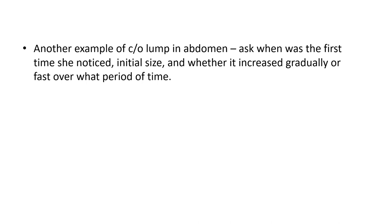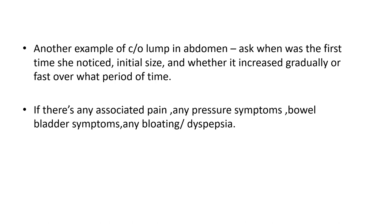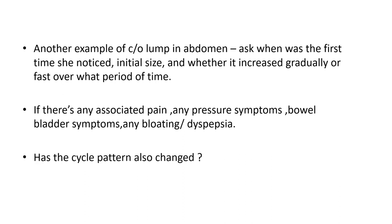Another example is a lump in the abdomen. Ask when was the first time she noticed that lump, what was the initial size, and whether it has increased gradually or fast over what period of time. Ask if there is any associated pain, any pressure symptoms related to bowel or bladder habits, if there is any bloating or dyspepsia — sometimes bloating and dyspepsia is the first lead towards an ovarian mass — and has the cycle pattern also changed.